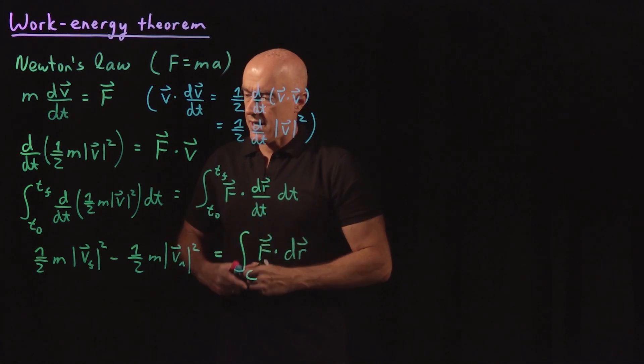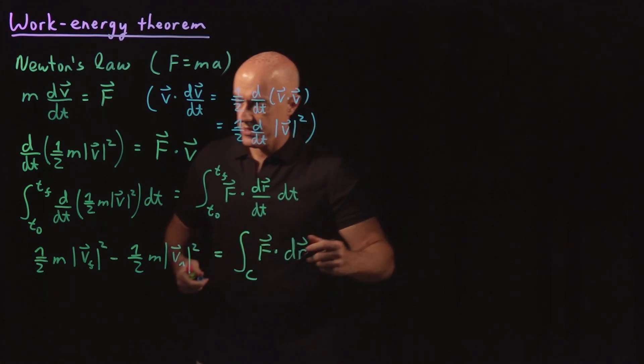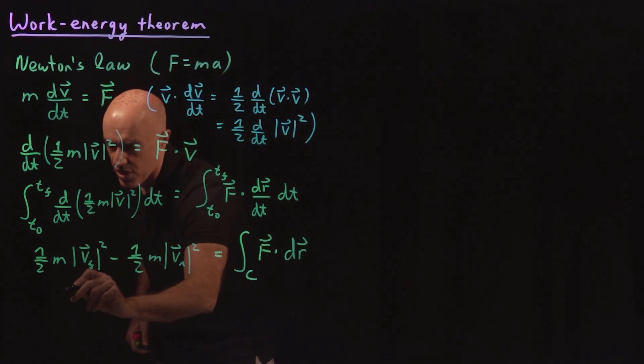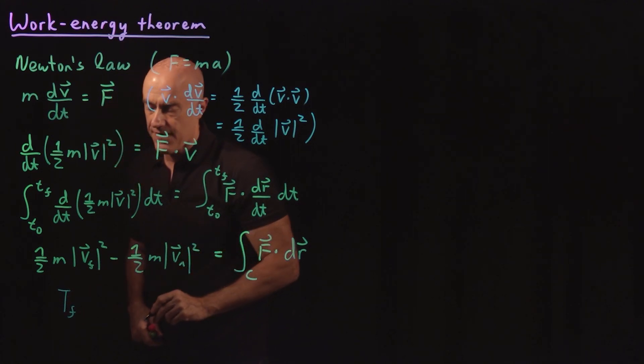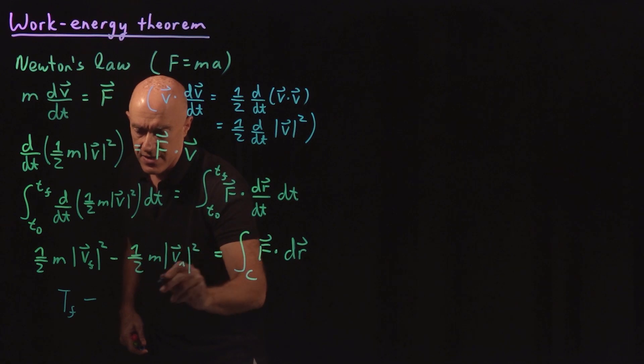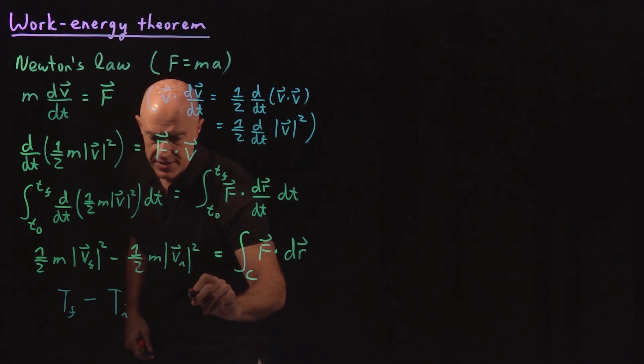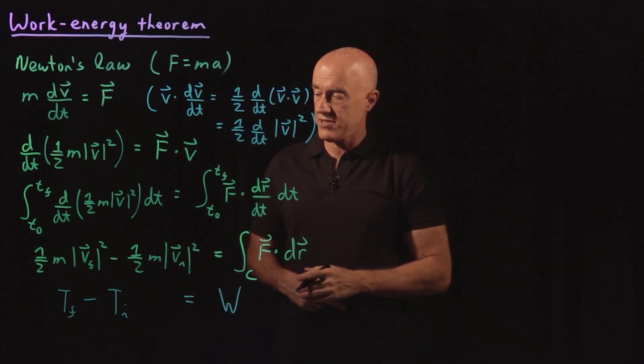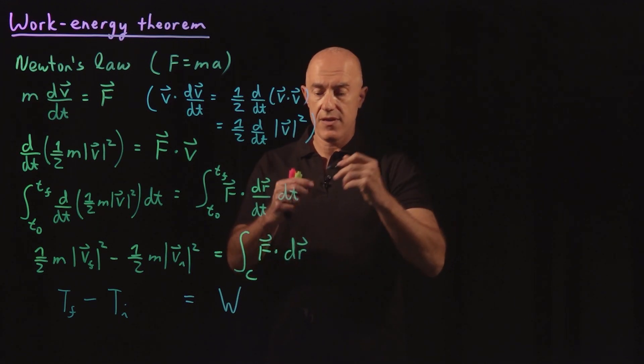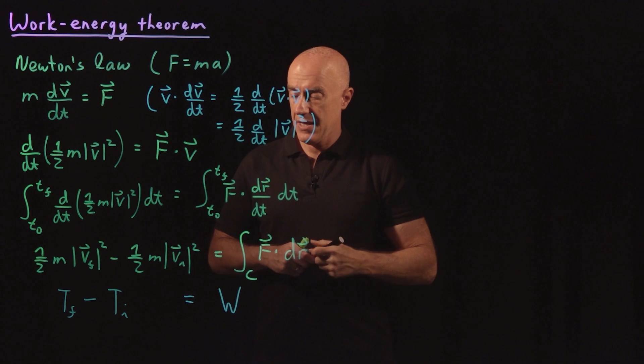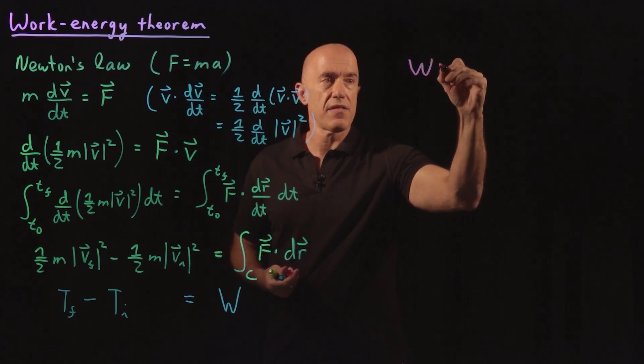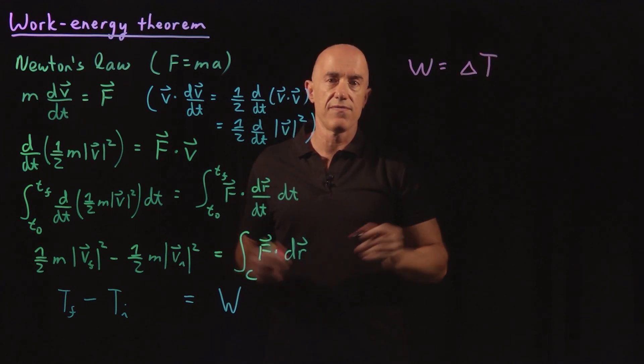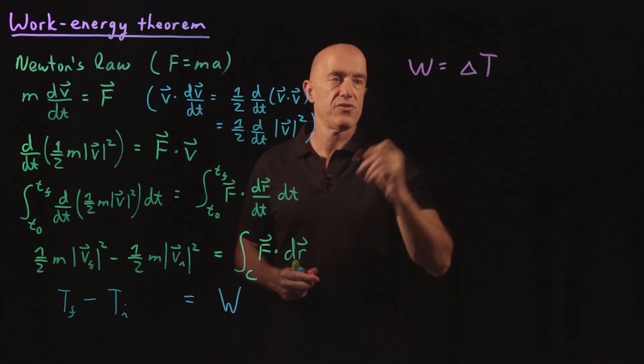So what is this? This is the definition of the kinetic energy. So this is usually called the final kinetic energy minus the initial kinetic energy. And this is what is called the work done by the force on the mass. So we have the work-energy theorem is that the work done by the force on the mass results in the change in the kinetic energy of the mass. That's the work-energy theorem.